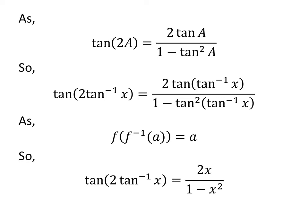As arctangent is the inverse of tangent, so tan(tan^(-1) x) equals x. Therefore, tan(2 tan^(-1) x) equals 2x upon 1 minus x squared. So the value has been found.